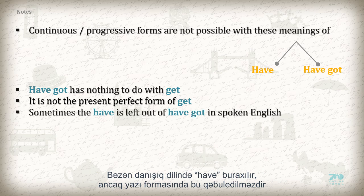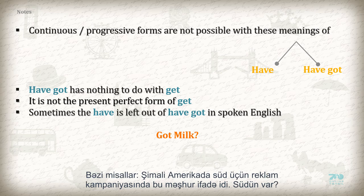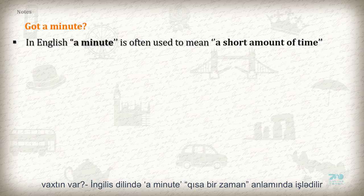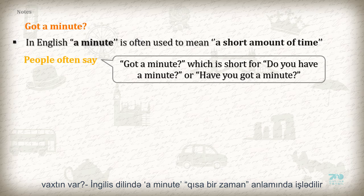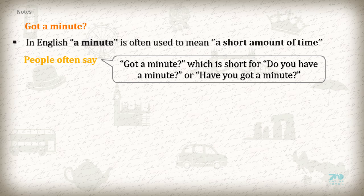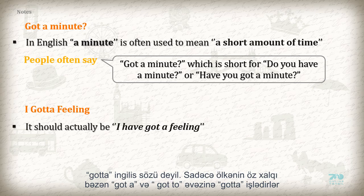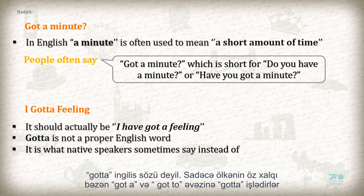Sometimes the have is left out of have got in spoken English, but it is not acceptable to leave out have in written English. Here are some examples. Got milk? — This is a popular advertising campaign for milk in North America; it should be Have you got milk? Got a minute? — In English, a minute is often used to mean a short amount of time. People often say Got a minute, which is short for Do you have a minute? or Have you got a minute? I got a feeling — it should actually be I have got a feeling.